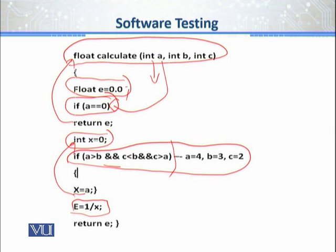x की जो भी value है उसको — यानी 1 पे x की value को divide करें और e को assign कर दें — and then return the value of e. The code देखने में सही लग रहा है — let us just try to analyze it from the white box testing viewpoint.